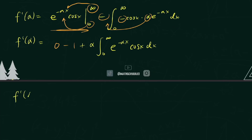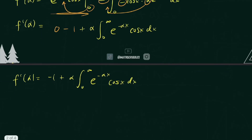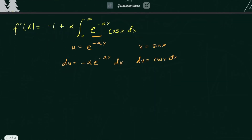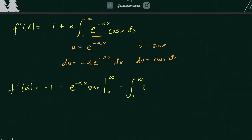We still have an integral involving e and a trig function, and typically for those you need integration by parts more than once — that's exactly what we'll do. Integration by parts a second time: u = e^(−αx), du = negative α · e^(−αx) dx, dv = cos(x) dx, and v = sin(x). We might seem to be going backwards, but it will help us. Now F'(α) = negative one plus e^(−αx) sin(x) evaluated from zero to infinity, minus the integral from zero to infinity of sin(x) times negative α · e^(−αx) dx.